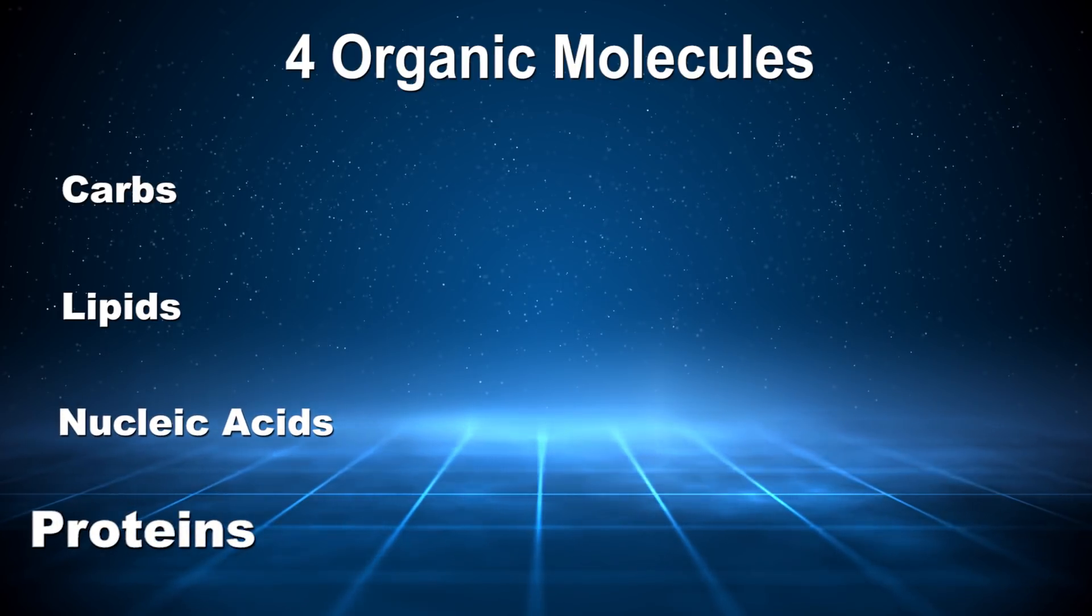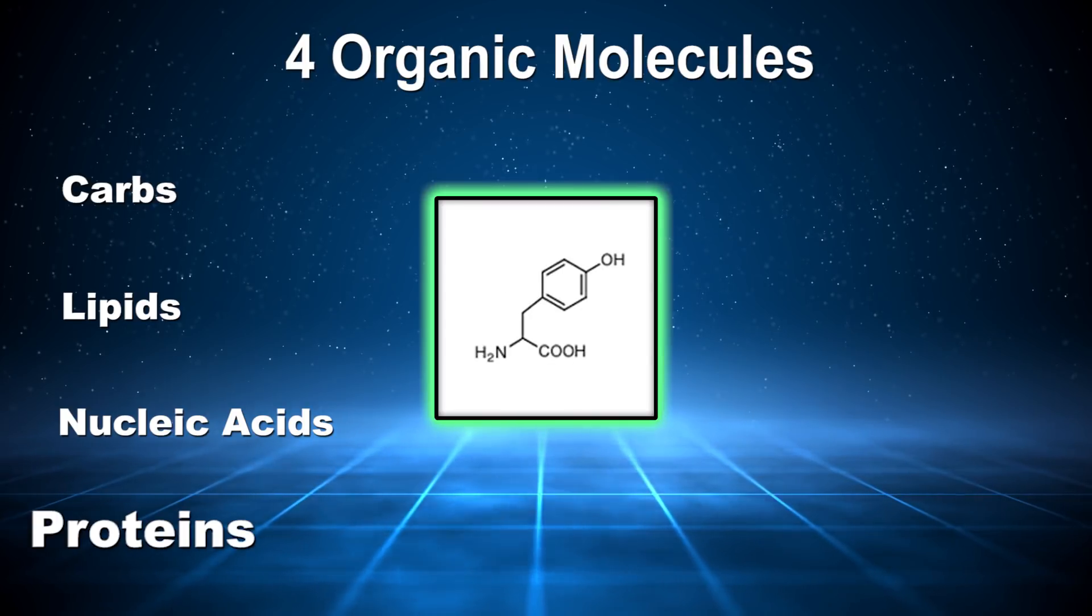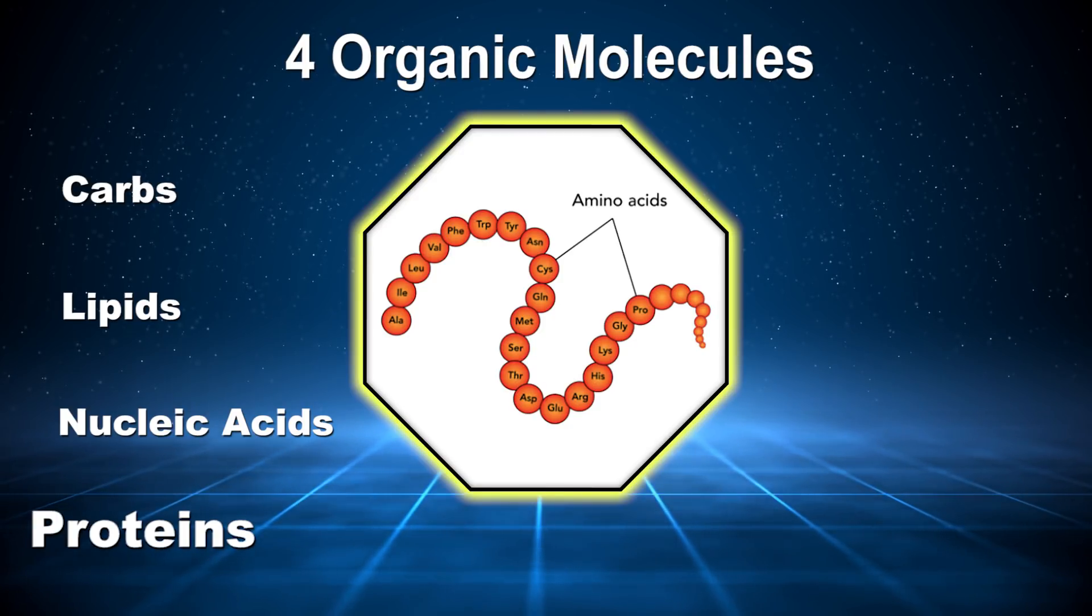And lastly, with proteins, simple elements like hydrogen, oxygen, carbon, and nitrogen, and sometimes sulfur, make up amino acids, which link together to make polypeptide chains.